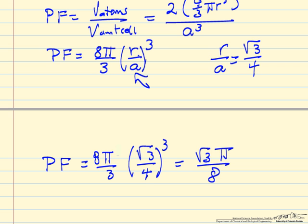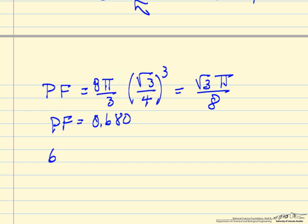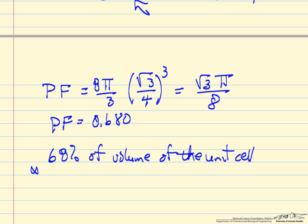So we made the substitution and simplified for the packing factor, now we just calculate then the packing factor as 0.680. So what this means is that 68% of the volume of the unit cell is occupied by the atoms. This is not the most dense packing, that's obtained for the closed-packed structures like face-centered cubic and hexagonal closed-packed.